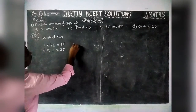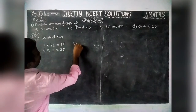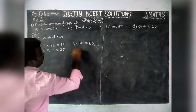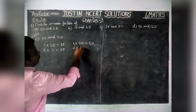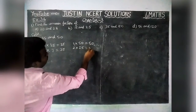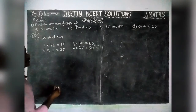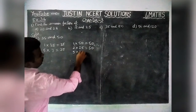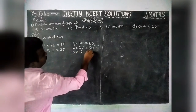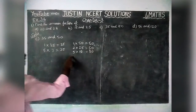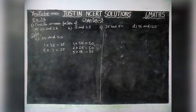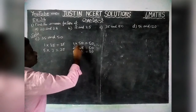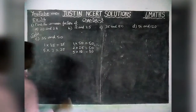Next, factors of 50. 1×50 is 50, 2×25 is 50, 3 and 4 will not come, 5×10 is 50, 6, 7, 8, 9 will not come, 10×5 is 50, 25×2 is 50, 50×1 is 50.